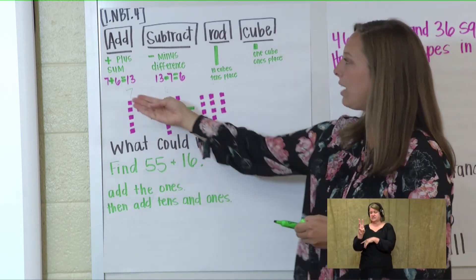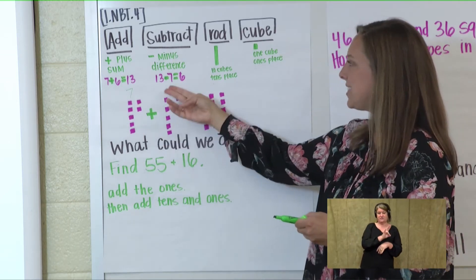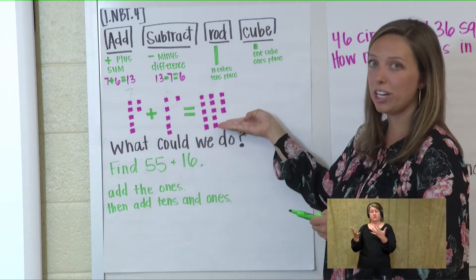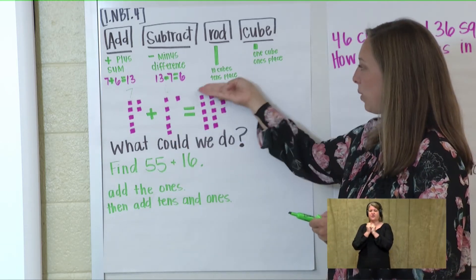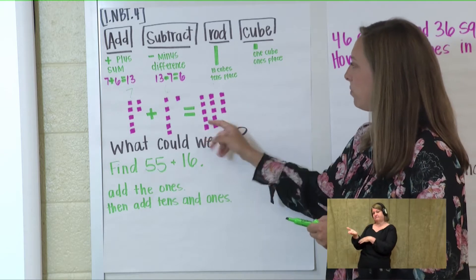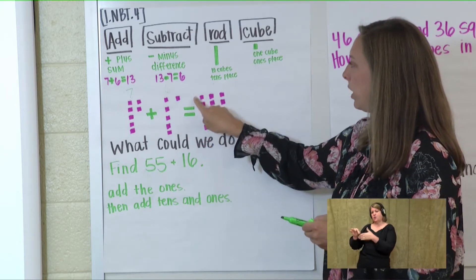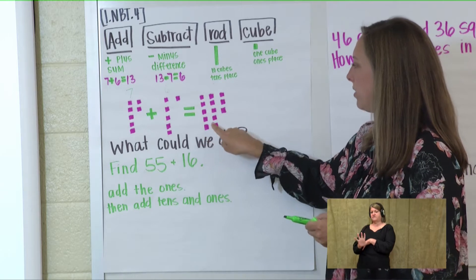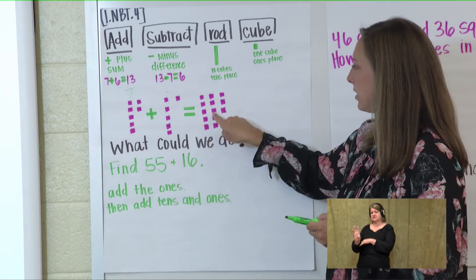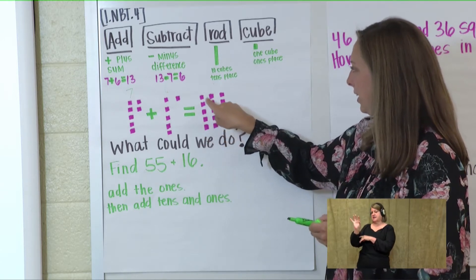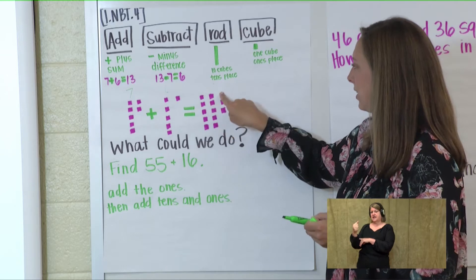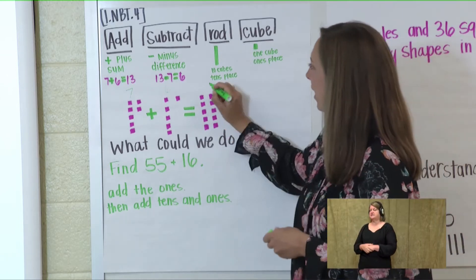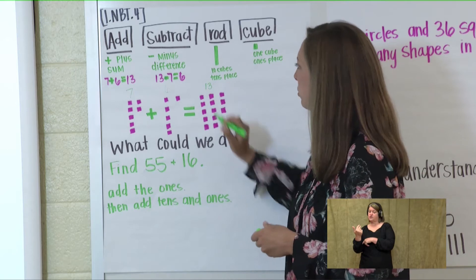So now I have 7 plus 6. We added our cubes together and this is what we got. Let's count them: 1, 2, 3, 4, 5, 6, 7, 8, 9, 10, 11, 12, 13. I have 13 cubes.